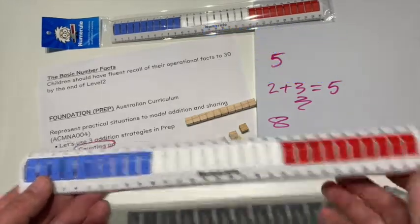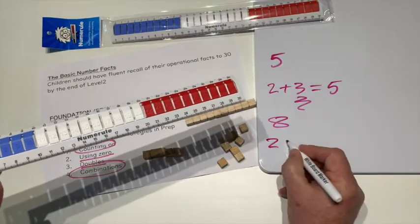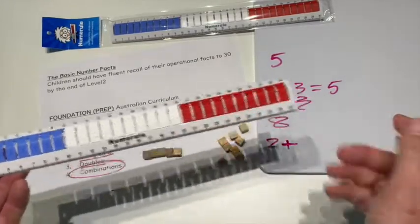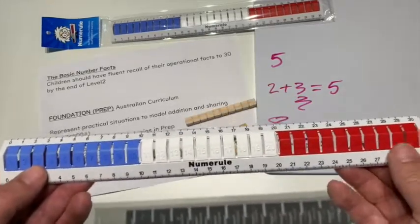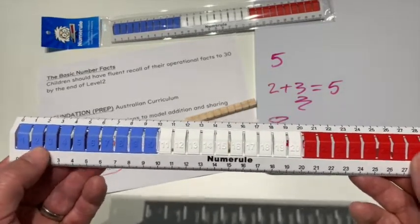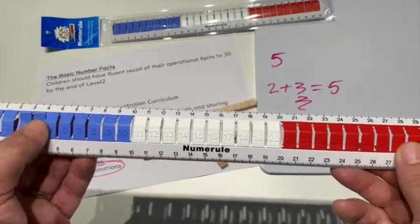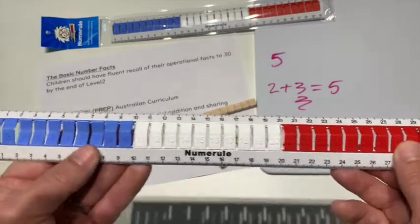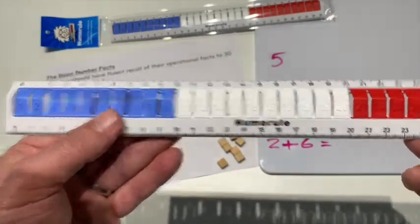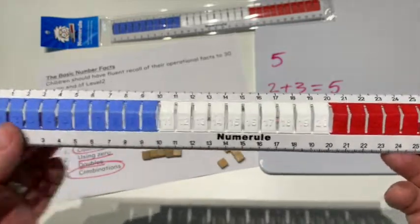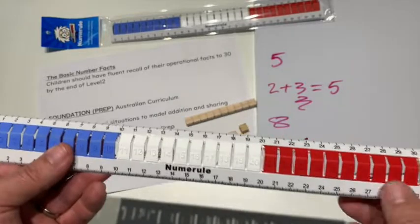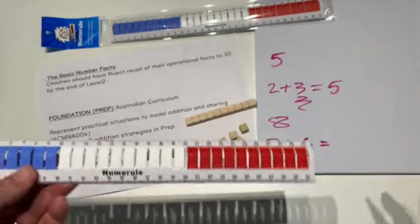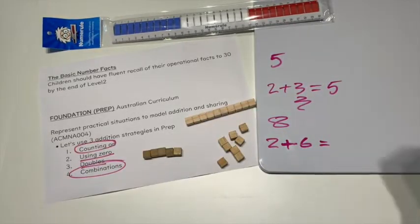Looking at the counting on strategy for eight, let's start with two plus six. We start with two and we'll add on six: one two three four five six, and we come up with eight. So that's our counting on strategy. It might be handy for you to understand that because teachers will talk about it a fair bit.